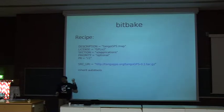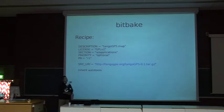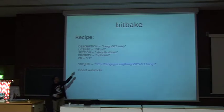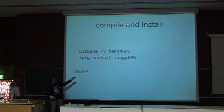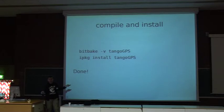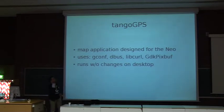To summarize the development workflow: set up the OpenEmbedded build environment using those three steps — get the Moko makefile, 'make setup', 'make development-image'. Then develop your application exactly like a desktop application. Set up the BitBake recipe file, then execute 'bitbake' — for me that's 'bitbake tango-gps' — and you have a ready-made package, just like an RPM for SUSE or a .deb for Debian, ready to install on your phone.